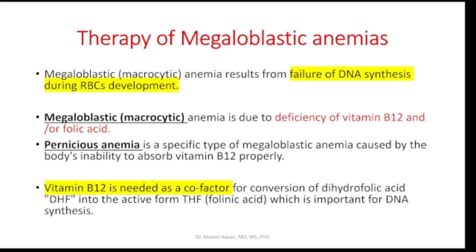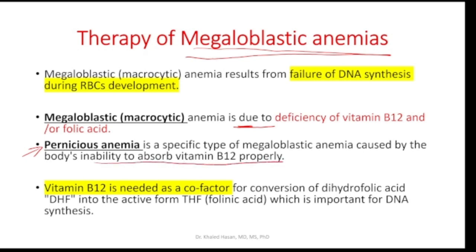Moving to megaloblastic anemia, which is mainly related to B12 and folic acid deficiency — also called macrocytic anemia — it results from failure of DNA synthesis during development of red blood cells. This situation could be due to deficiency of B12 and/or folic acid. Deficiency of these substances may lead to pernicious anemia, which is a specific type of anemia associated with the inability to absorb B12 from the GI system, because B12 needs to combine with intrinsic factors.